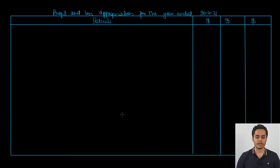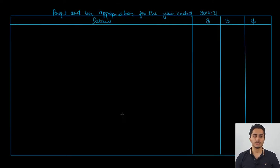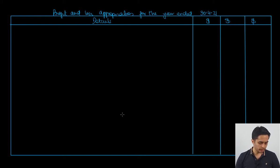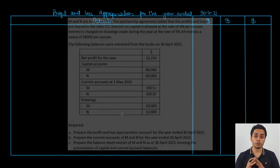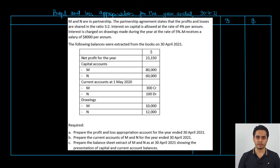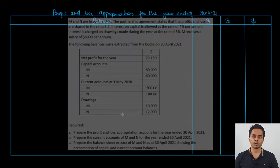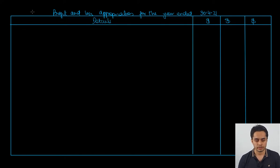We have a format of the profit and loss appropriation account. The profit and loss appropriation begins with the net profit brought forward from the income statement. The net profit given in the question is 23,150, so we start with the net profit for the year.